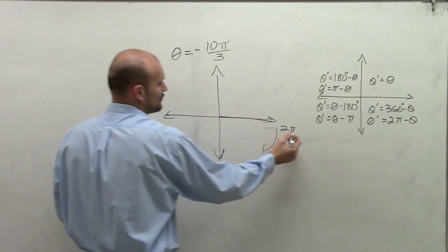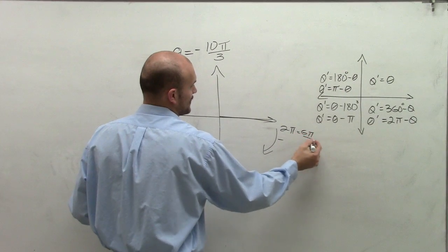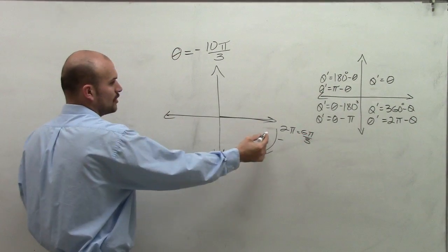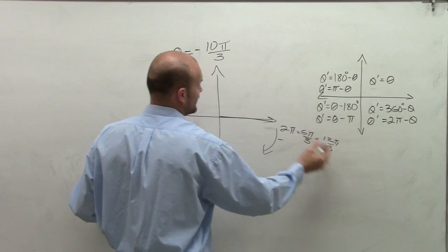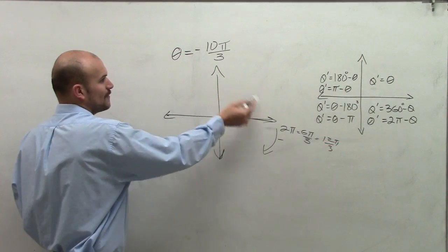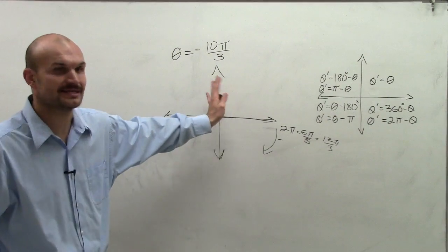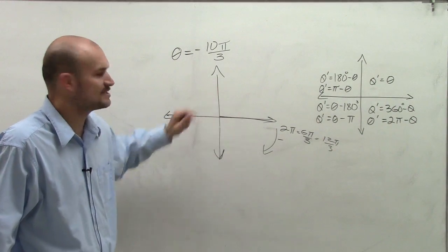Well, in a denominator of 3, that's equivalent to 6 pi over 3. So if I was going to go around again, that would only take me to 12 pi over 3 in the negative direction. So therefore, my angle is going to fall somewhere in this first or second quadrant.